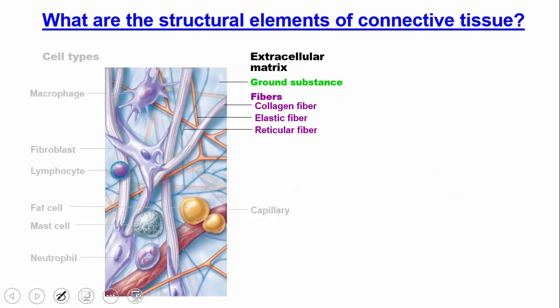Let's look at the structural elements of connective tissue. One type of fiber is the collagen fiber, which is a little thicker and provides tensile strength — pulling strength. A slightly thinner, more rubber-like fiber is the elastic fiber, which provides flexibility. Then we have the reticular fiber, which gives support and covers things.